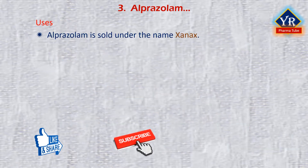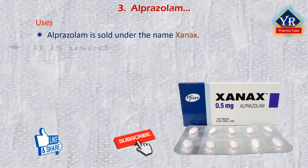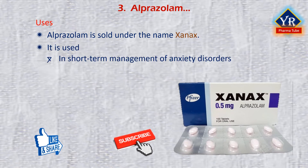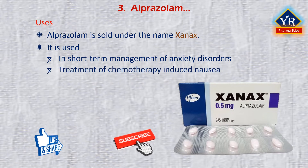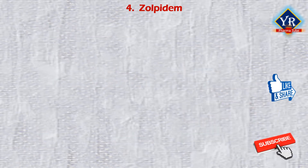Alprazolam is sold under the brand name Xanax. It is most commonly used in short-term management of anxiety disorders, specifically panic disorder or generalized anxiety disorder. Other uses include the treatment of chemotherapy-induced nausea together with other treatments. Alprazolam is generally taken by mouth.